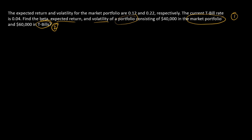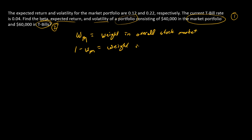Let's define some terms up front. WM is going to be the weight in the overall market portfolio. And instead of defining WRF separately, I'll use the fact that weights must sum to one, so 1 minus WM is the weight in T-bills — the risk-free asset.